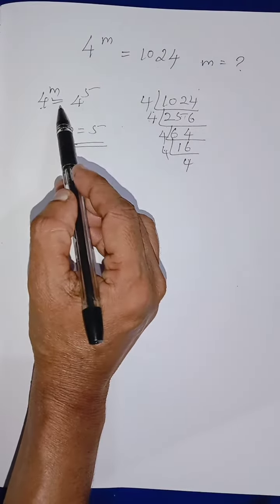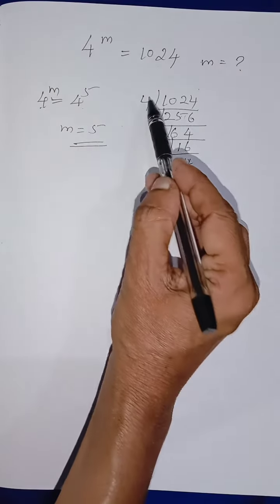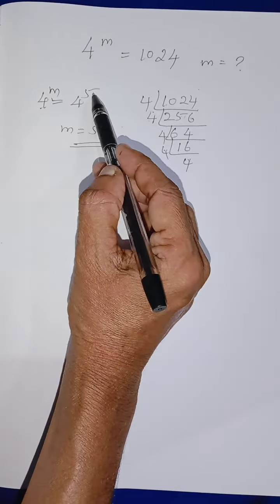So 4 to the power of m is equal to 4 how many times? 1, 2, 3, 4, 5. So 4 to the power of 5.